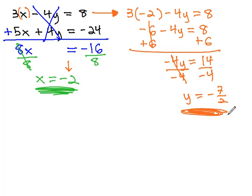We now know what the x-y combination is, where these two lines will intersect. They will intersect when x is negative 2 and y is negative 7 halves.